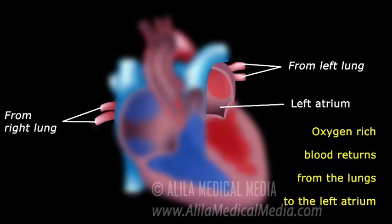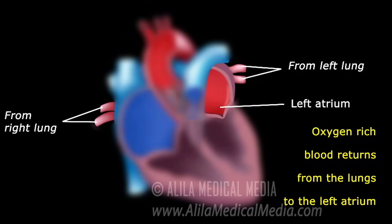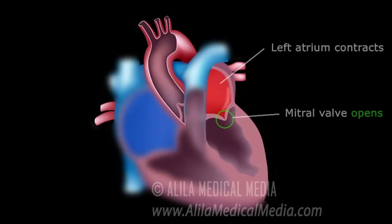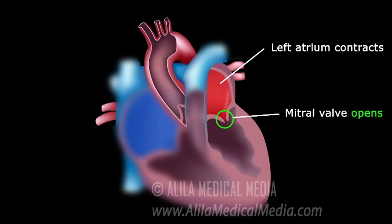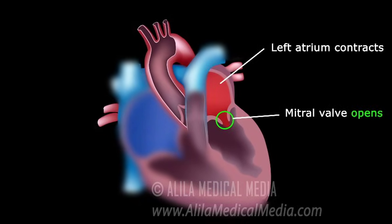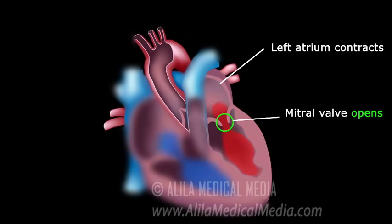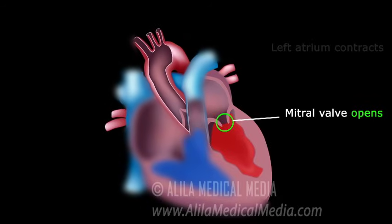Oxygen-rich blood from the lungs returns to the left atrium of the heart. As the left atrium is filled with blood, it contracts, the mitral valve opens, and blood is pumped into the left ventricle of your heart. This occurs at the same time as the right atrium pumps blood into the right ventricle on the other side of the heart.